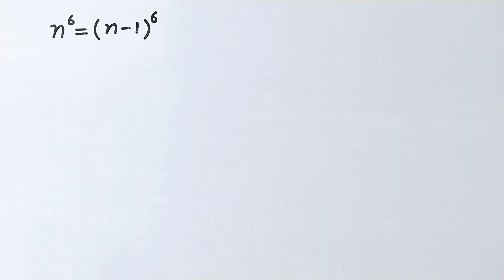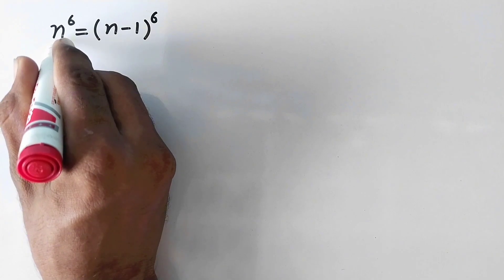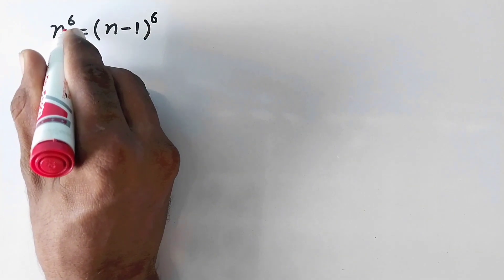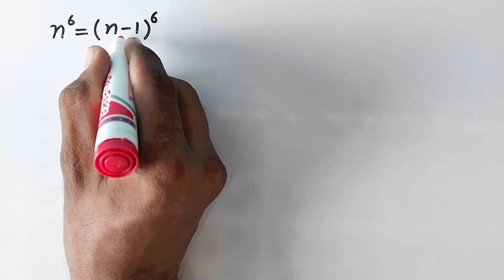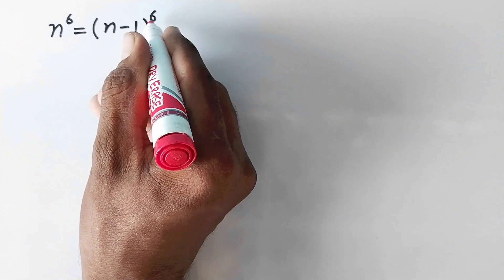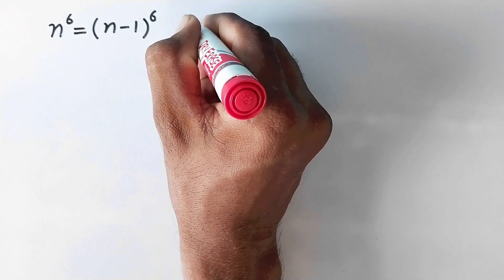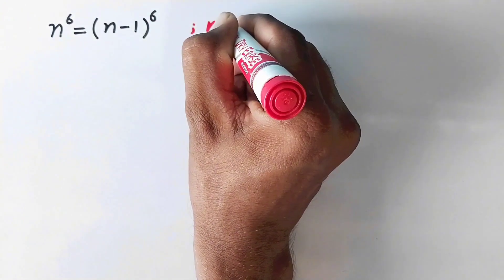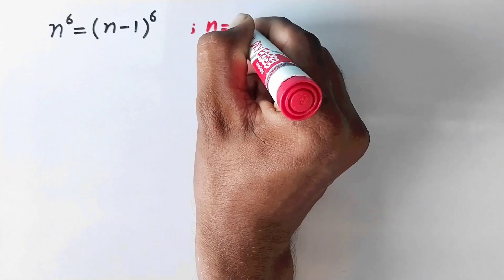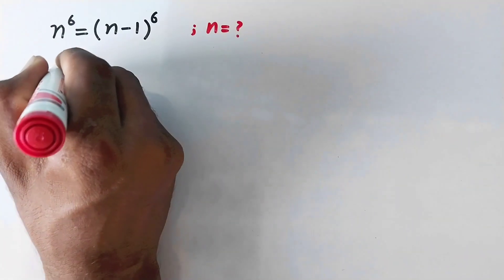Hello everyone, welcome to Explored Maths. Today we are going to solve the question: n to the power 6 is equal to n minus 1 to the whole power 6, and we have to find the value of n. Let us see the solution.